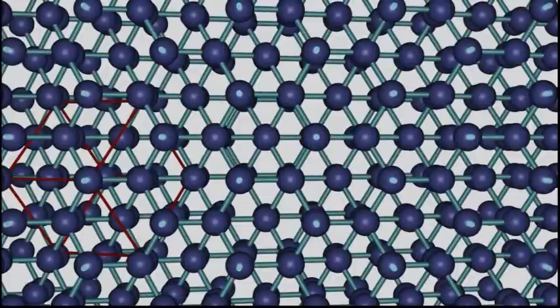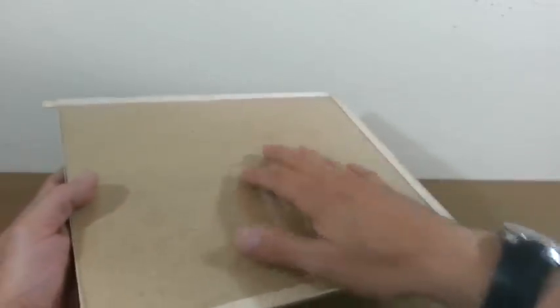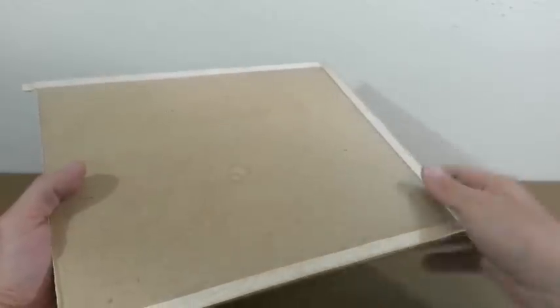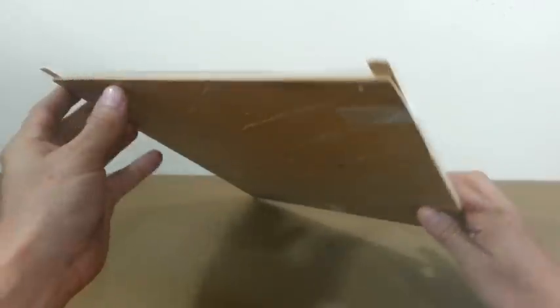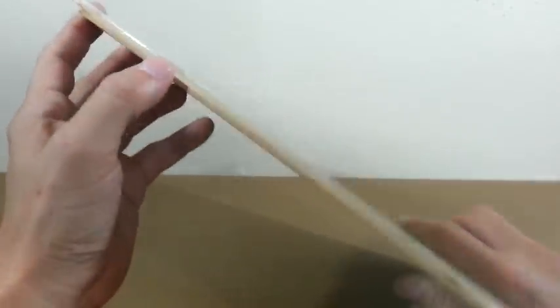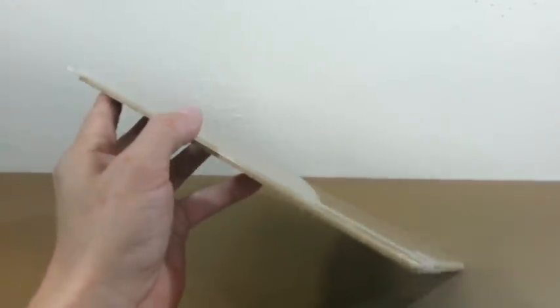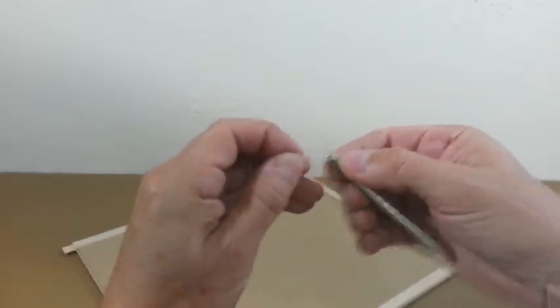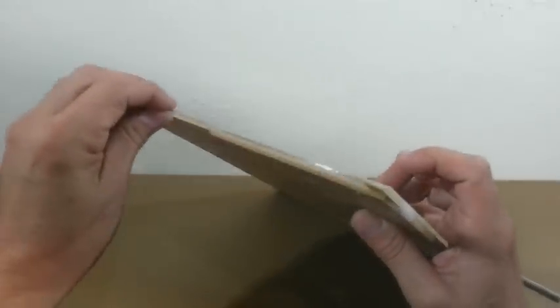Something similar happens when we place a collection of magnets near each other, as we will see in this video. I will place the magnets here — it is nothing more than a piece of acrylic and a wooden base. There is a space between the acrylic and the wood where you can insert the magnets. The space is too small so that the magnets cannot rotate; they can move freely, but they cannot rotate.